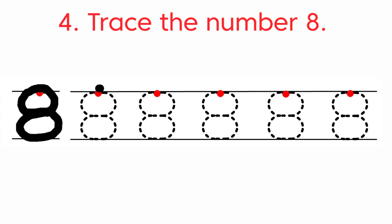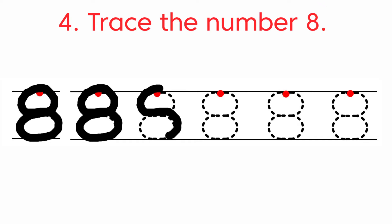Starting from the red dot, we are going to draw a forward curve facing down, then a backward curve facing up, then a forward curve and again a backward curve. This is how we write number 8. First we draw a forward curve facing down, then a backward curve, then facing up a forward curve, then again a backward curve at the top. This is how we write number 8.